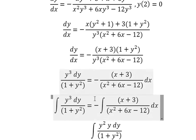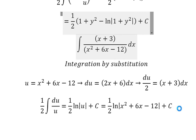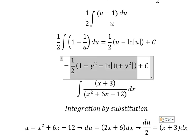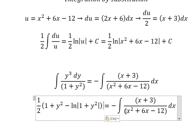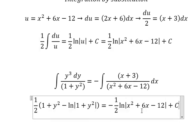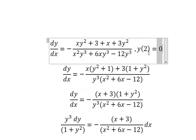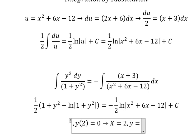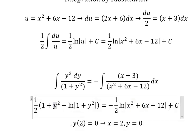Now let's go back to this one. The integration of this side gives this result, and this one gives this result. Now we have the conditions — when x equals to number 2, y equals to number 0. We put number 2 in here and number 0 in here to find the value of c.